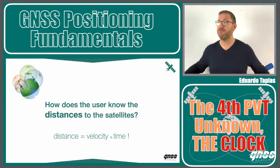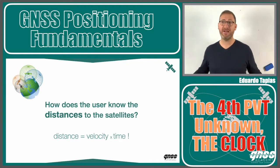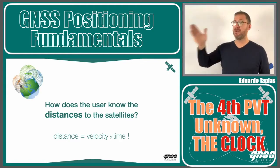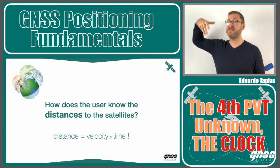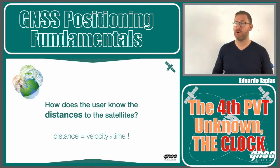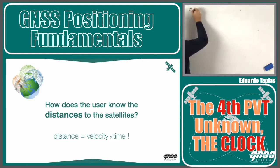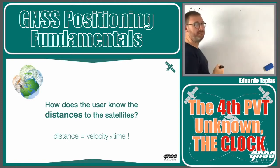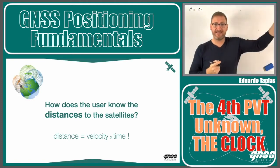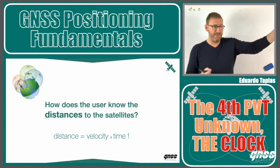Which velocity? The speed of light. Electromagnetic signals travelling through space travel at the speed of light — a constant value. So the distance equals the speed of light multiplied by the time of travel between the satellite and the receiver.